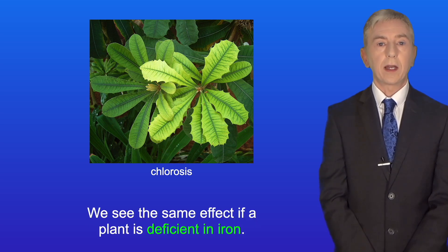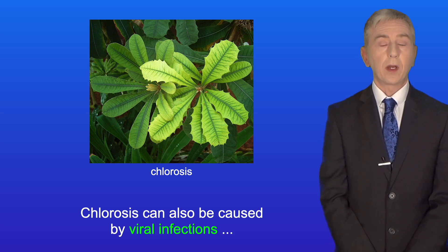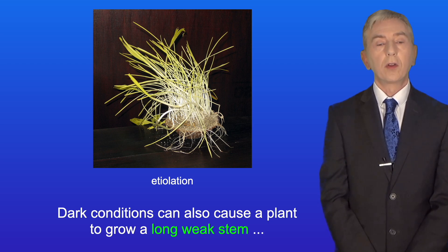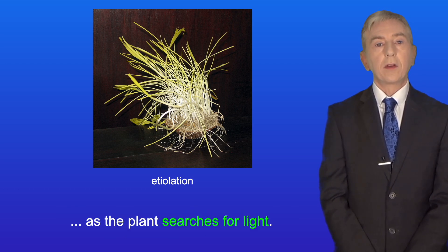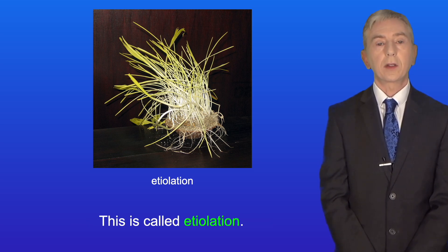We see the same effect if a plant is deficient in iron. Chlorosis can also be caused by viral infections or if the plant is kept in the dark. Dark conditions can also cause a plant to grow a long weak stem as the plant searches for light. This is called etiolation.